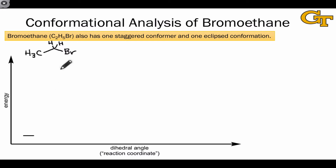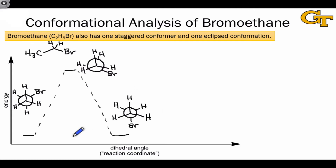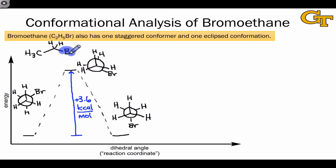Drawing a conformational energy diagram for bromoethane: as expected, the staggered conformation is an energy minimum while the eclipsed conformation is an energy maximum. Further rotation leads back to a staggered conformation equivalent in structure and energy to the original. The interesting thing to note is that the activation barrier here—the energy difference between staggered and eclipsed conformations—is slightly higher than in ethane, about 3.6 kilocalories per mole. We can attribute this to the larger size of the bromine atom; its greater steric bulk makes steric interactions more severe in the eclipsed structure, and placing the carbon-bromine bond at a 60-degree dihedral angle alleviates that steric repulsion to a large degree.